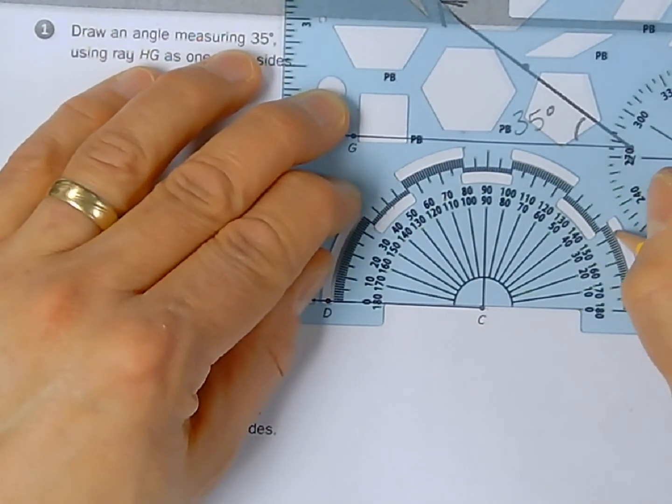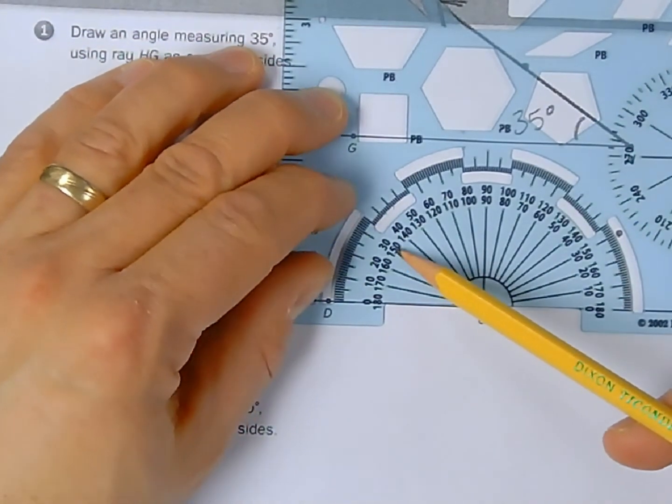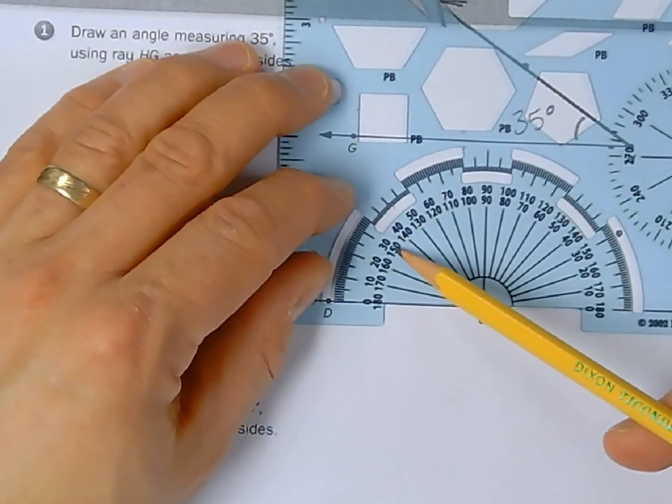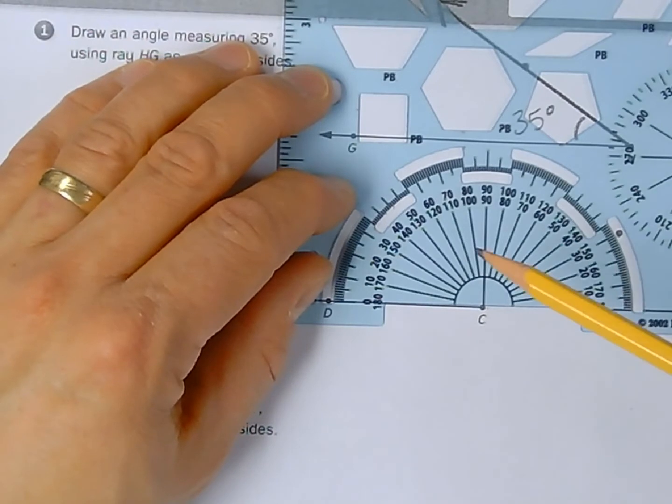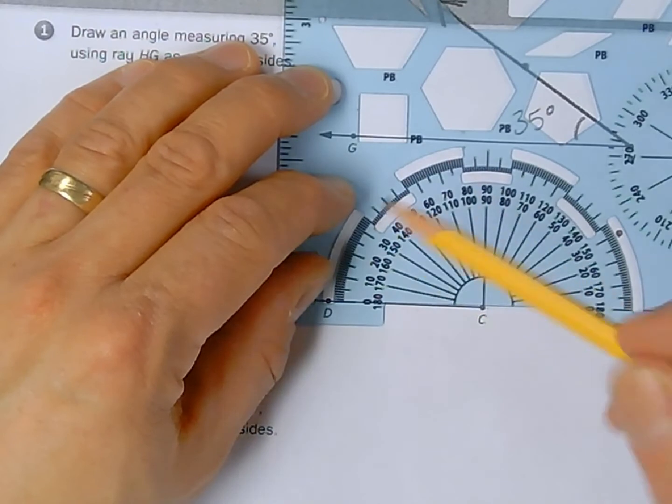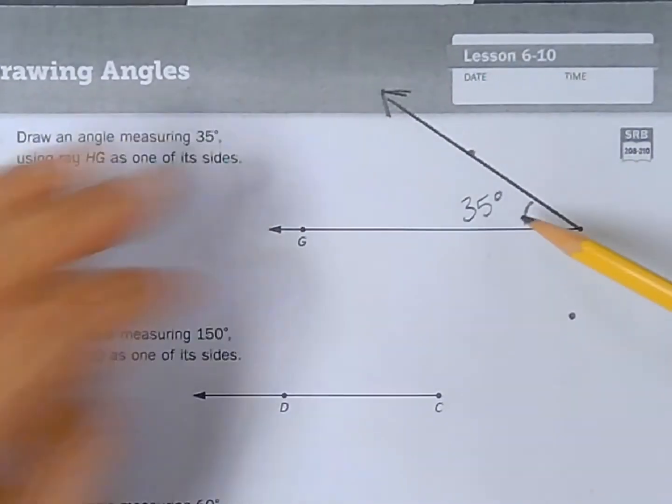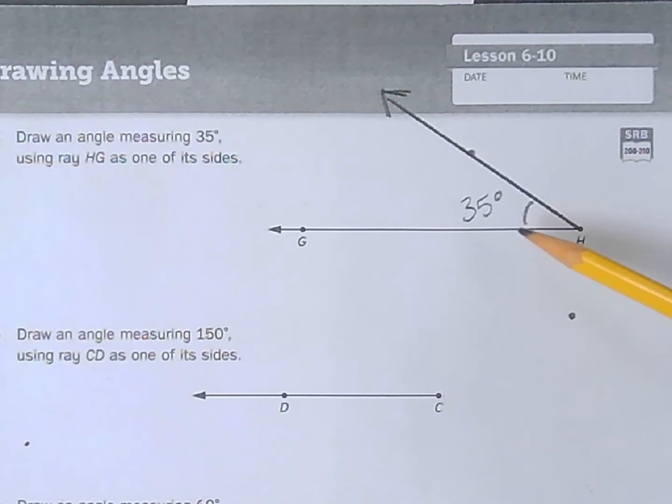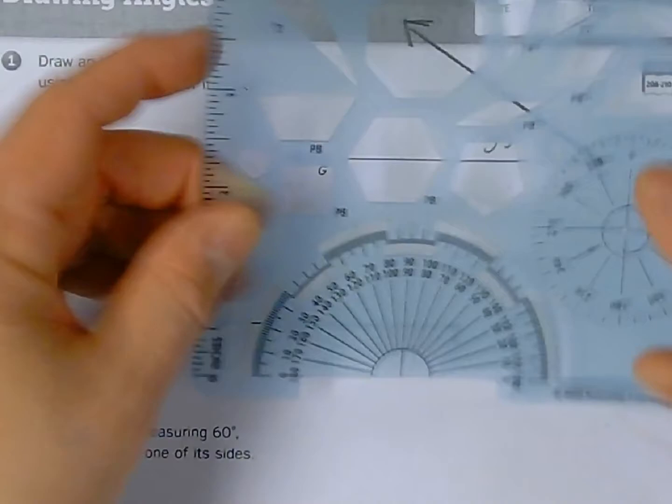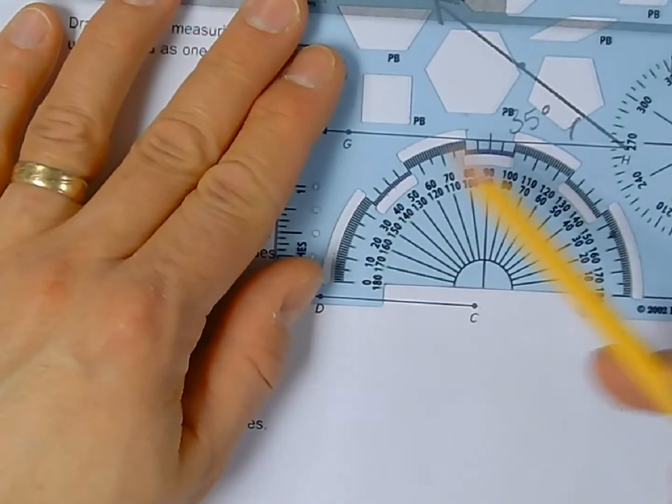Then I'm going to point something out to you, and that is 150 is also listed over here. Now that can be confusing for some kids because they will see it labeled 150 and think, oh I could just put the dot there, and they would make an angle that looks a lot like problem number one, a very acute angle. What's going on here? Well, this protractor allows me to measure angles from both directions.